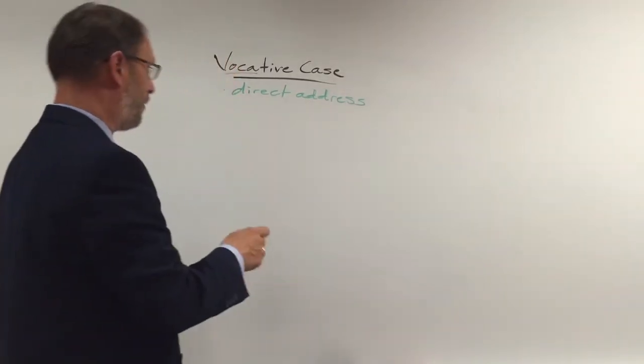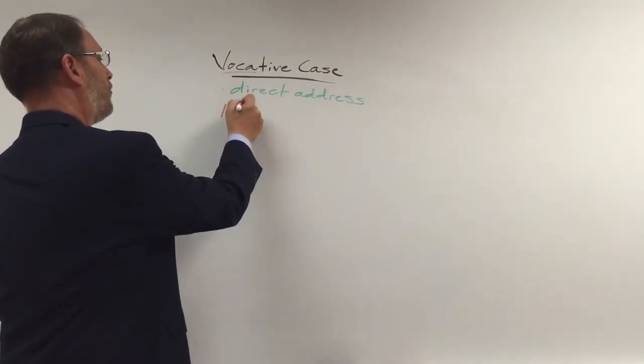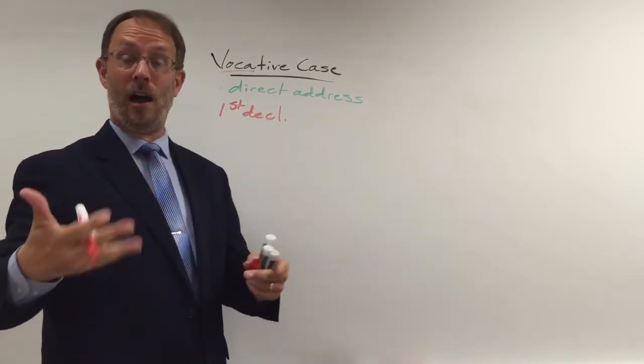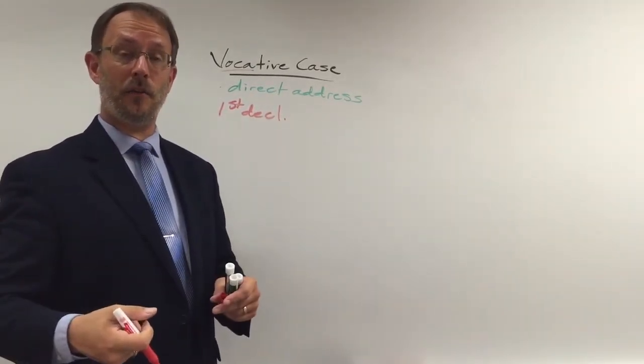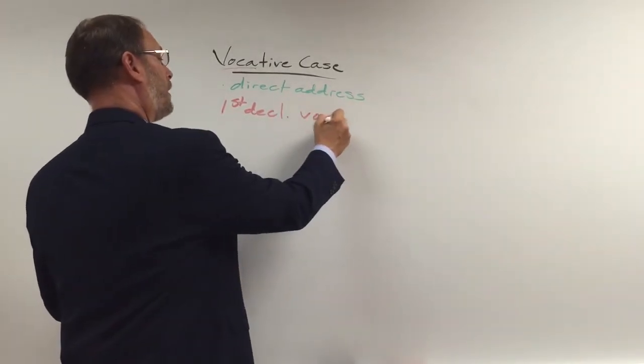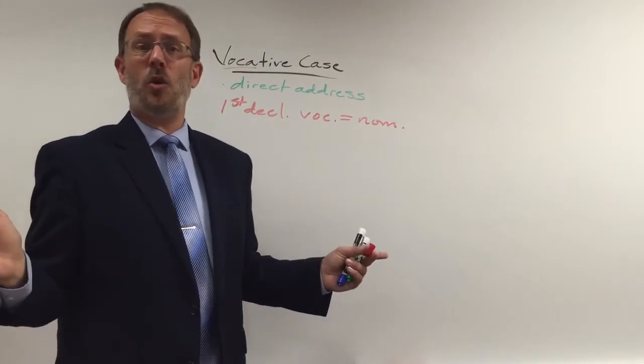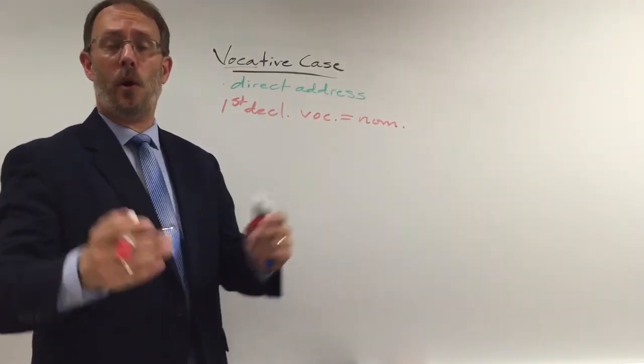Now this is really easy. For vocative case, first declension, so the words with a, ae, ae, am, a, ae, arum, is, as, is, those words. First declension vocative is the same as the nominative. There's no difference. I don't need to teach you anything new because you already know it.